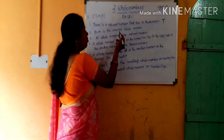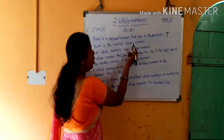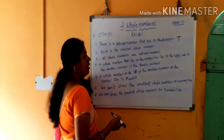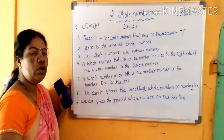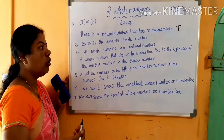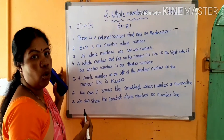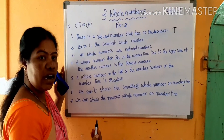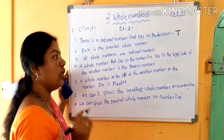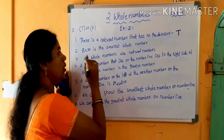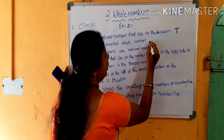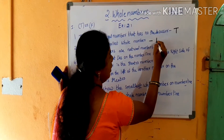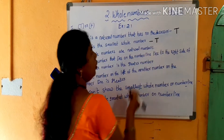Second: 0 is the smallest whole number. Yes, this statement is true, because the whole numbers start from 0 only. So 0 is the smallest whole number. This statement is true.